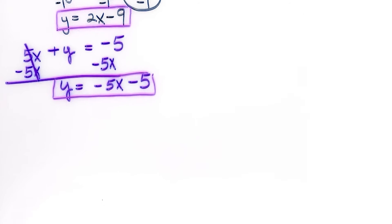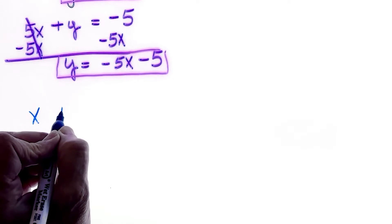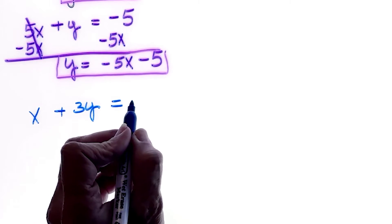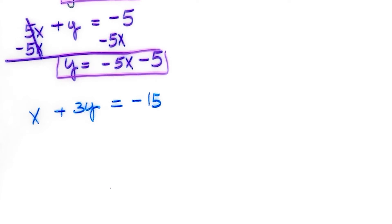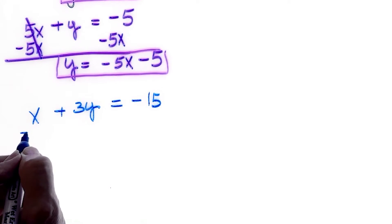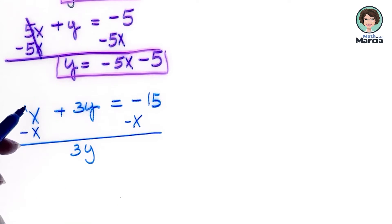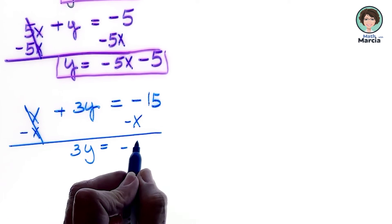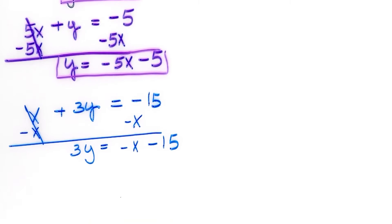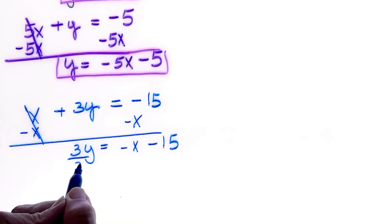Let's try one more where I have x plus 3y equals negative 15. To change it to slope-intercept form from standard form, I subtract x to the other side. Once x cancels out, I have 3y equals negative x minus 15. I'm not done because I cannot have that 3 with the y — I need to divide everything by 3.